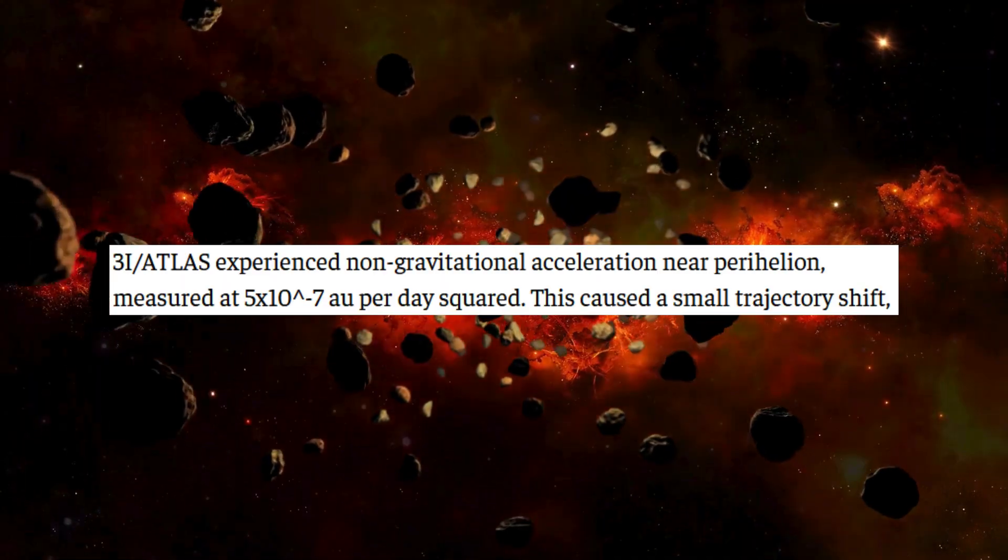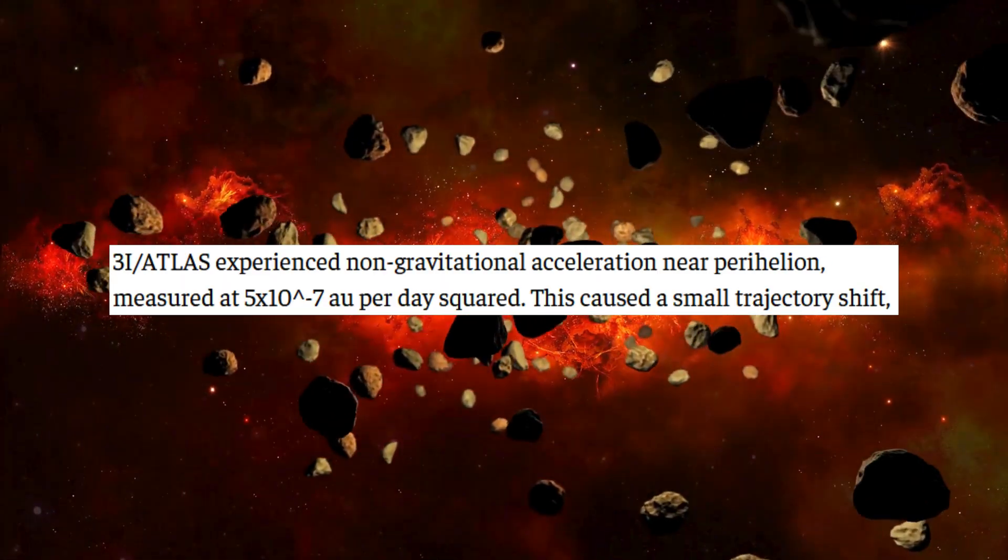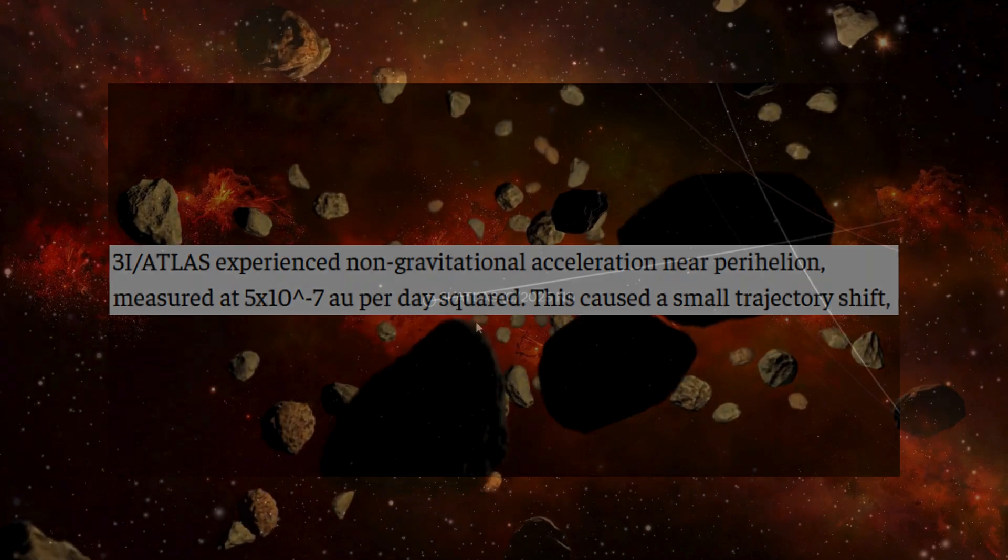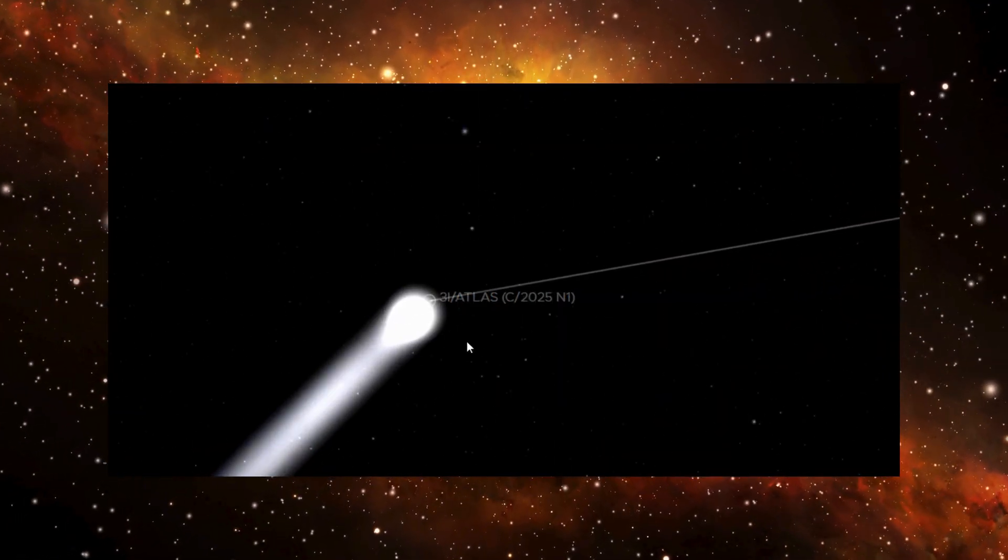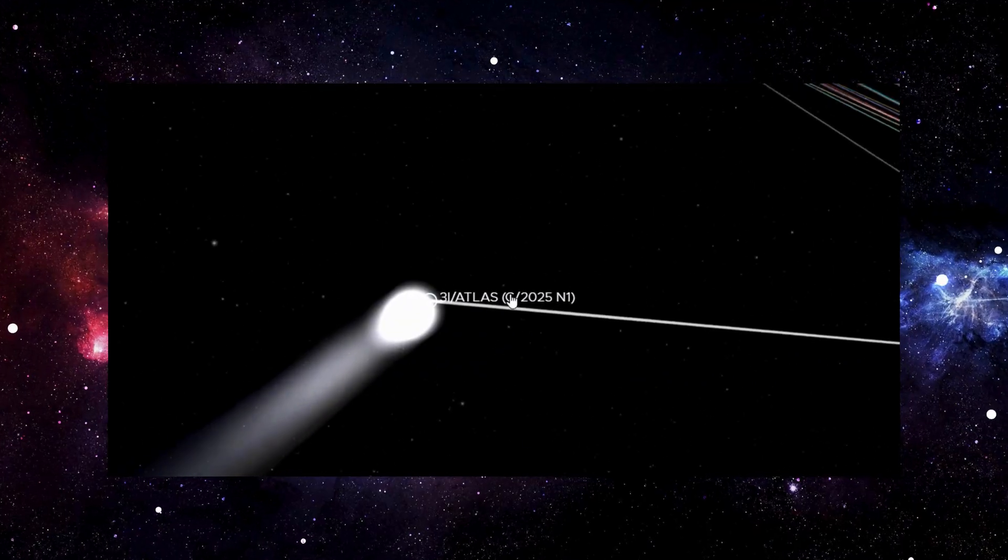This acceleration was measured at roughly 5 times 10 to the 7th astronomical units per day squared. In plain English, that means its path was being nudged, subtly but consistently, in ways that gravity alone simply can't account for.